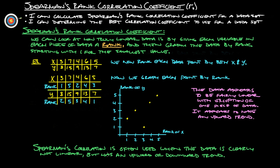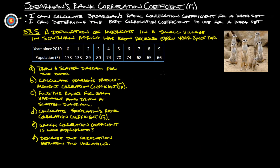So Spearman's correlation is often used when the data is clearly not linear, but does have an upward or downward trend. Let's look at an example to kind of help us better understand the Spearman's rank correlation coefficient.